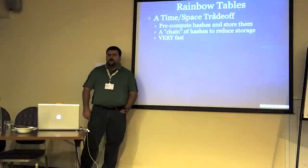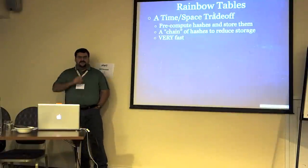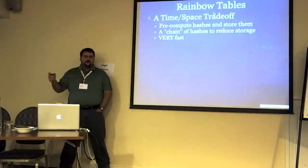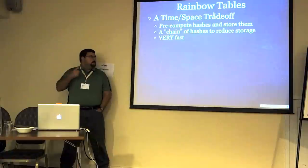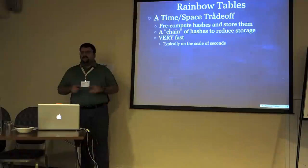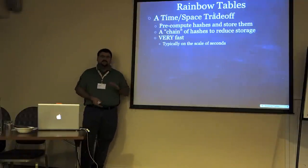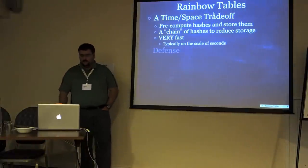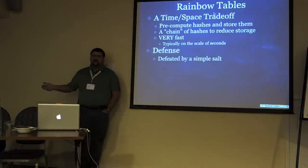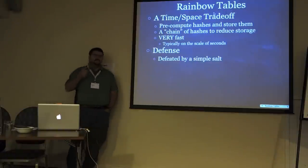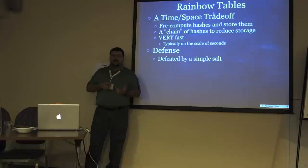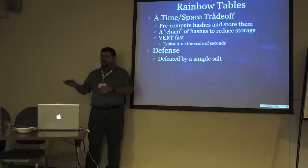MD5 has an input space of 128 bits, which means there's a ridiculous number of possible hashes. Brute-forcing all of them is actually really slow. But a rainbow table can be incredibly fast — typically on the scale of seconds, depending on your chain size. The longer the chain size, the more space-efficient it is, but the slower it is to execute. To defend against it, you add a salt, because a salt prevents pre-computation — you'd have to generate a separate rainbow table for every hash.